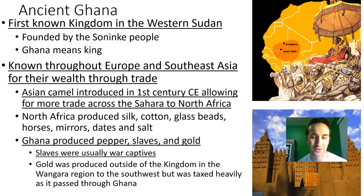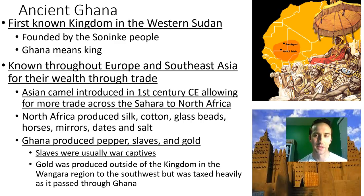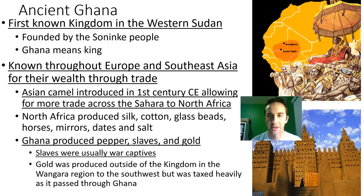Gold was actually produced outside of the kingdom, in the Wangara region to the southwest, but was taxed heavily. Anybody that passed through the kingdom of Ghana had to pay a pretty heavy tax, and so we get massive amounts of gold really building up this empire, and we start to see some interesting architecture in this early Ghana area.